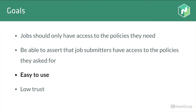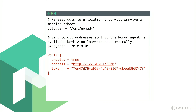On the server side, all you need to enable Vault integration is a simple config block: enable Vault, provide the address to talk to it, and provide a Vault token. This Vault token needs access to the policies that your job submitters will have.